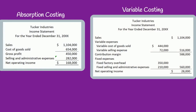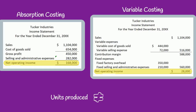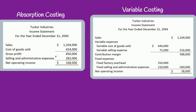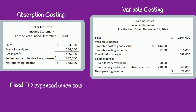The difference between absorption costing and variable costing is the fixed factory overhead. You will get different net operating income figures under each method if the number of units produced during a period is different than the number of units sold. Under absorption costing, the fixed factory overhead is split between units that are sold — cost of goods sold on the income statement — and units that are still in inventory, work in process, and finished goods on the balance sheet.